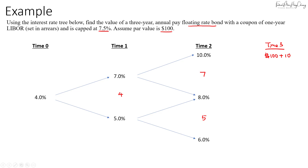At time 2, an 8% rate gives a coupon of $8 at time 3, and a 6% rate gives a coupon of $6. Any rate above 7.5% (i.e., any coupon above $7.50) must be capped at $7.50. So the $10 coupon is capped to $7.50 and the $8 coupon is also capped to $7.50. The $6 coupon and the lower coupons of $7, $5, and $4 are all below $7.50 and remain unchanged.